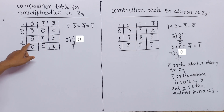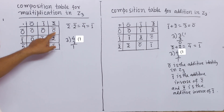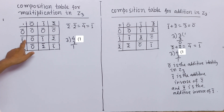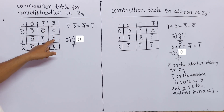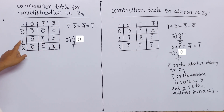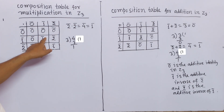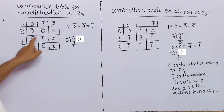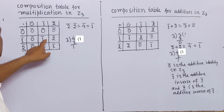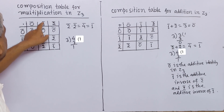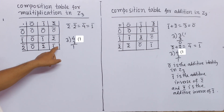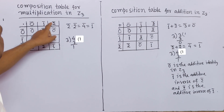Here we see that 1̄ × 0̄ = 0̄, 1̄ × 1̄ = 1̄, 1̄ × 2̄ = 2̄. When 1̄ is multiplied by any member, we get that member — therefore 1̄ is the multiplicative identity in Z₃. Since 1̄ × 1̄ equals the multiplicative identity, 1̄ is the multiplicative inverse of itself. And since 2̄ × 2̄ = 1̄, 2̄ is the multiplicative inverse of 2̄ in Z₃.